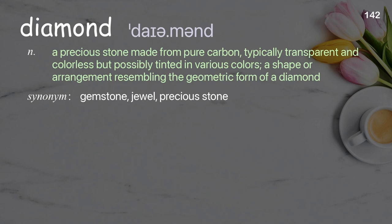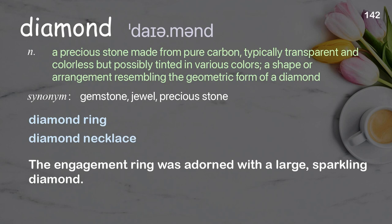Diamond: a precious stone made from pure carbon, typically transparent and colorless but possibly tinted in various colors; a shape or arrangement resembling the geometric form of a diamond. Examples: diamond ring; diamond necklace. The engagement ring was adorned with a large, sparkling diamond.